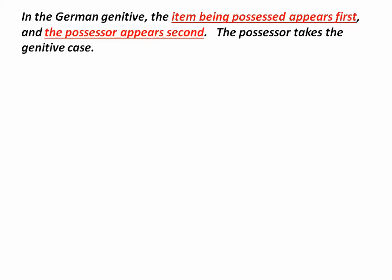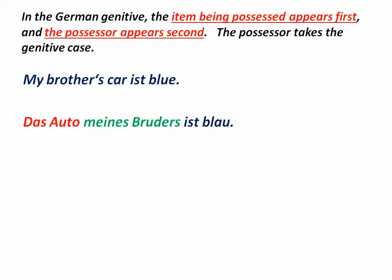In the German genitive, the item being possessed appears first, and the possessor appears second. The possessor is the noun that takes the genitive case. For example, to say 'my brother's car is blue' in German, you start with the car — it's almost like saying 'the car of my brother.' So this would be 'das Auto meines Bruders.' 'Bruder' is a 'der' word, masculine, changing to 'des,' but since we're using 'mein,' we add ES to that. 'Brüder' is two syllables, so we add an S to it.